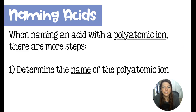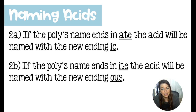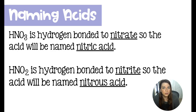But if we're naming acids that have the anion as a polyatomic ion, then there are just a few more steps. We're going to look at that polyatomic ion and figure out its name. If that poly's name ends in '-ate' (A-T-E), then we're going to give the acid a new ending: '-ic'. So HNO3 has the polyatomic ion nitrate — NO3 is nitrate — and that would be translated when it's an acid into nitric acid.